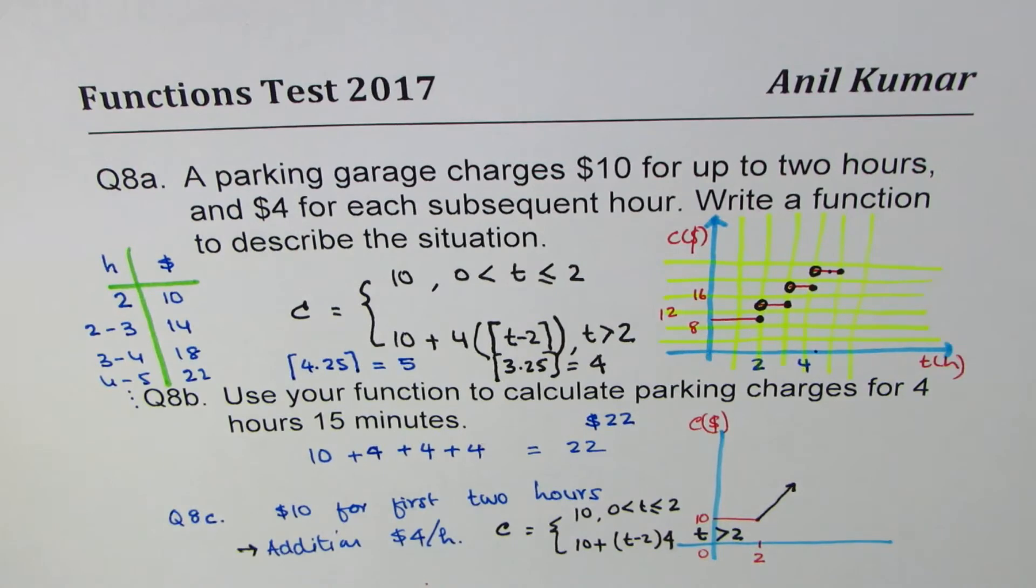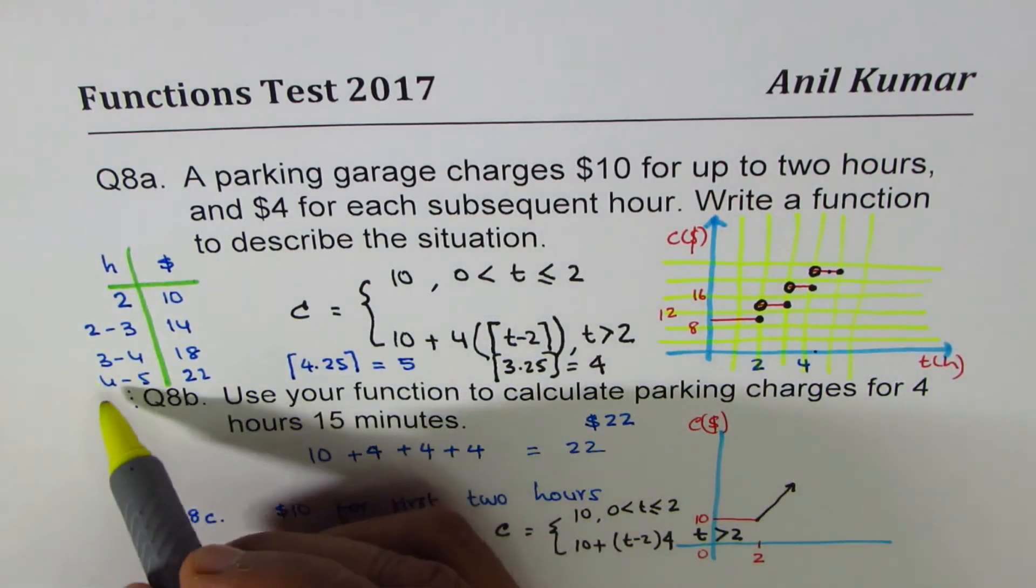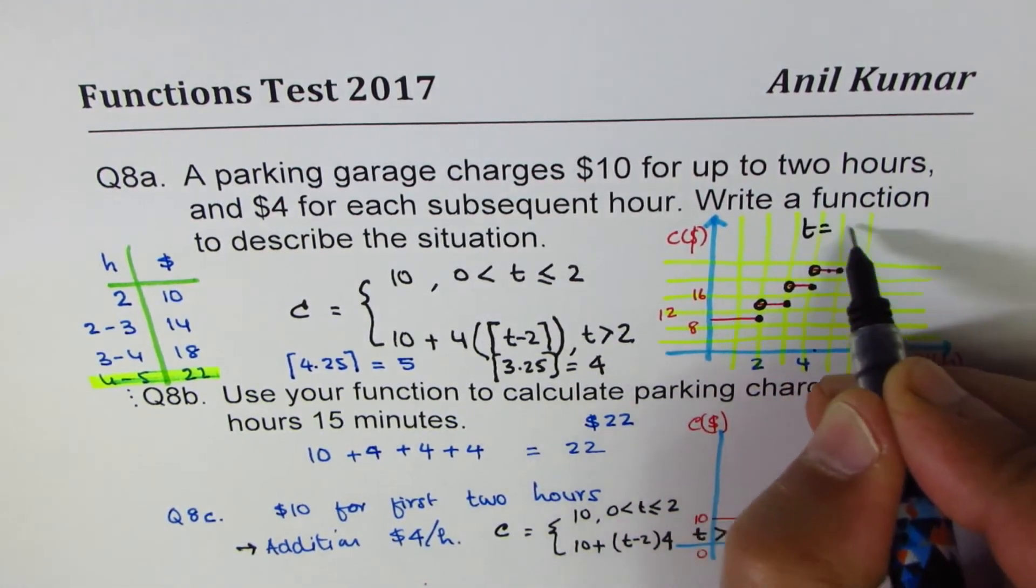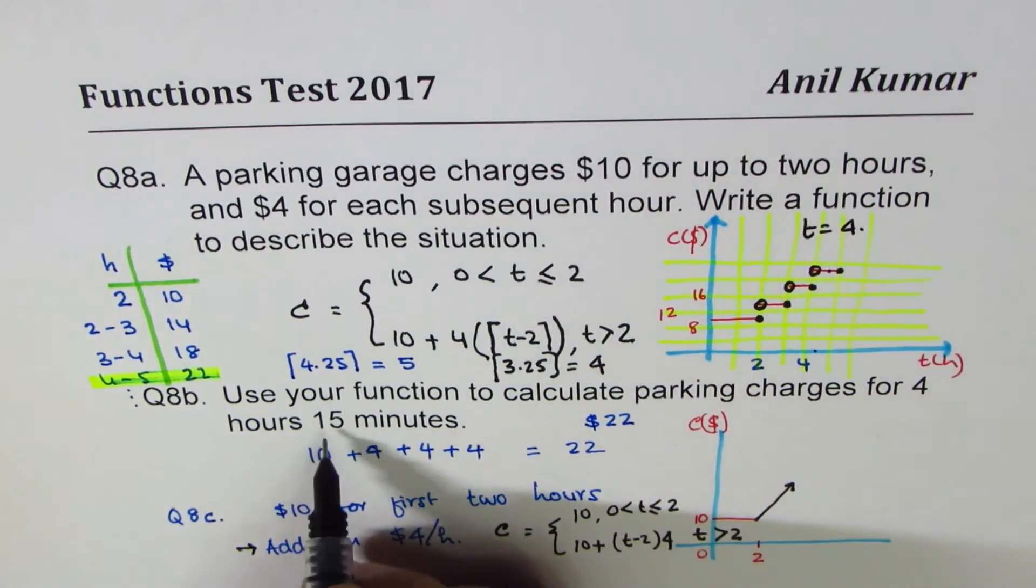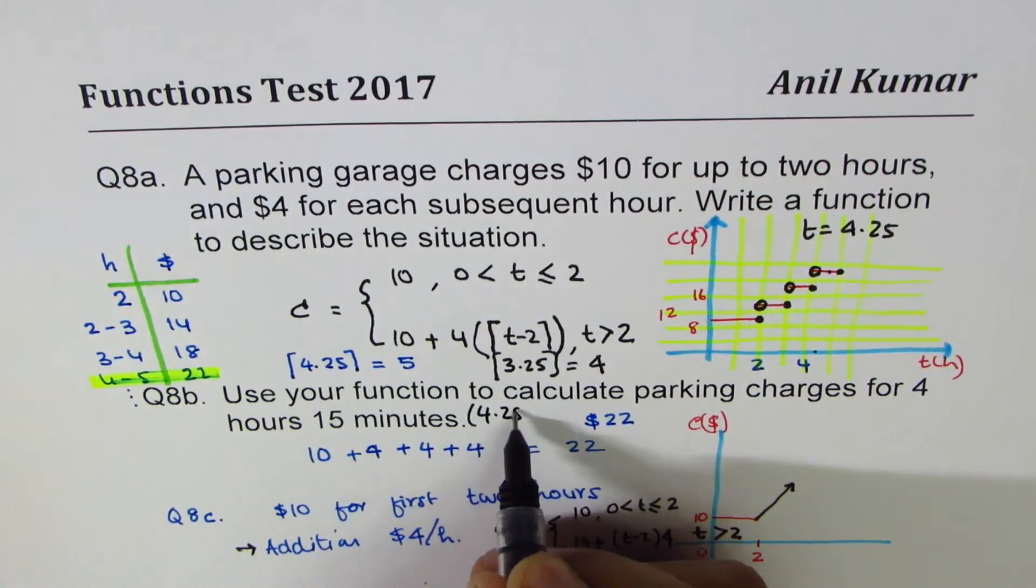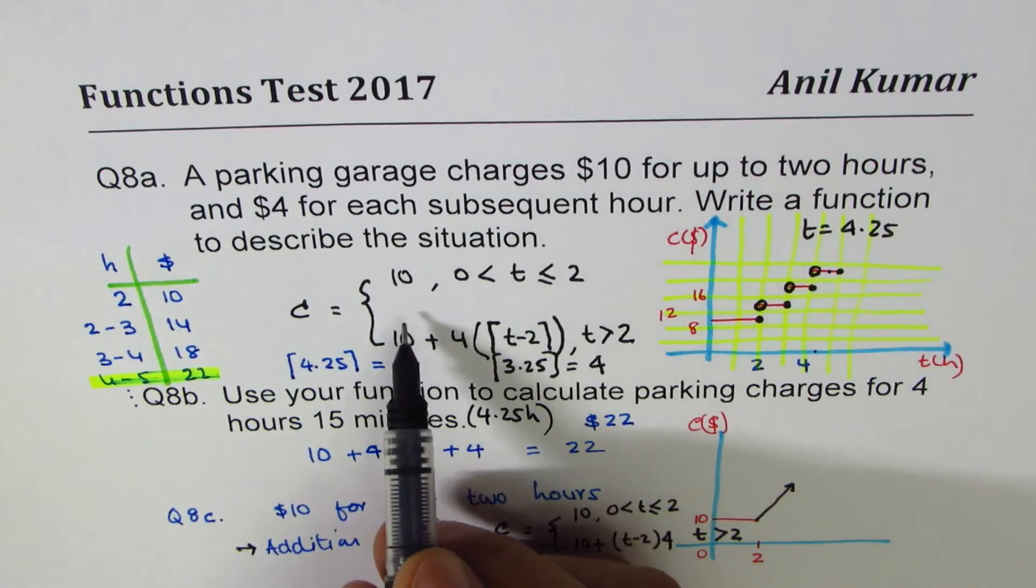So that is how we have to do our calculation. Now, let us use the formula and find the solution. So let me do this calculation, which we have found between 4 to 5 hours. We get 22 as our answer. Let's do this calculation on the right side. So if the time is 4 hours, we say time equals to 4.25. 15 minutes means 4.25 hours.